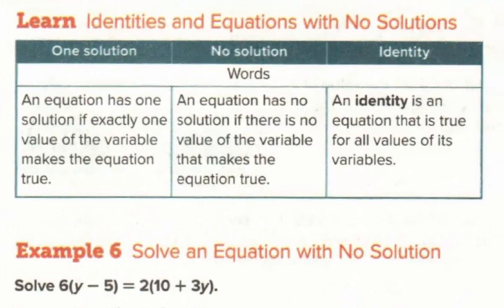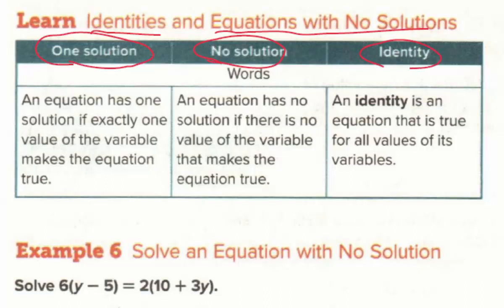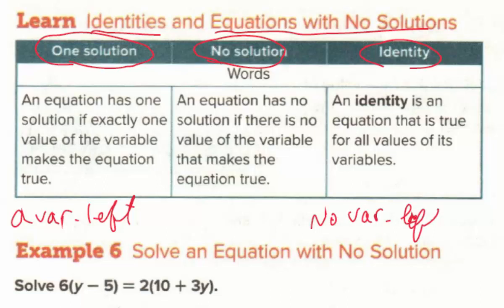This part of the lesson covers identities and equations with no solution. There are three possible scenarios: one solution, no solution, and an identity. One solution means exactly one value of the variable makes the equation true — a variable remains in the problem. For no solution or identity, the variable completely drops out. If the remaining statement is false, there's no solution; if it's always true, it's an identity.